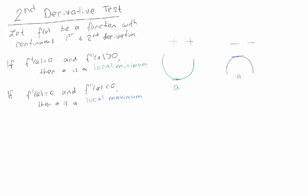Notice this test doesn't say anything about critical points whose second derivative is 0. The test doesn't tell you what's going on if the second derivative is 0 — you have to do something else. Let's practice applying this. Suppose we have a function and we want to know its local maxes and mins. Local maxes and mins only occur at critical points and singular points, but this function doesn't have any singular points, so let's find its critical points.